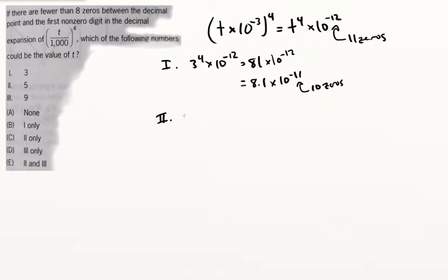The second one is going to be 5 to the fourth times 10 to the minus 12. 5 to the fourth is 5 squared squared, so 25 squared, 625 times 10 to the minus 12, which is going to give us 6.25 times 10 to the minus 10, which gives us 9 zeros. We're getting closer, but still not there.